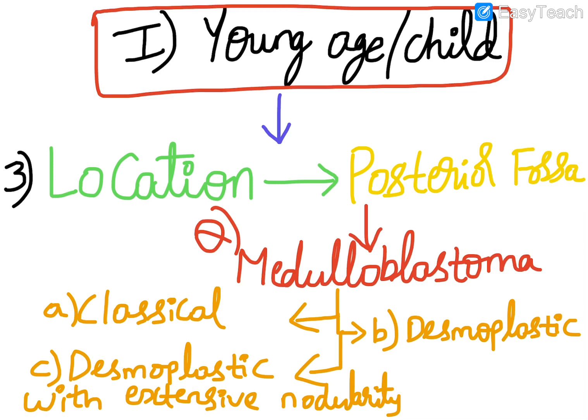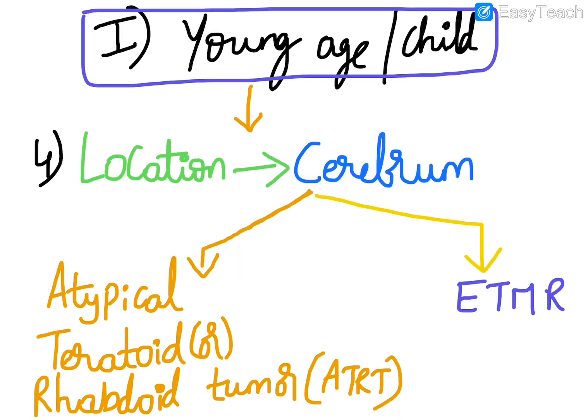Medulloblastoma is a pediatric age group tumor which has four subtypes: classical medulloblastoma, desmoplastic type, and desmoplastic with extensive nodularity type. Moving on to the cerebrum as a location in the pediatric age group.